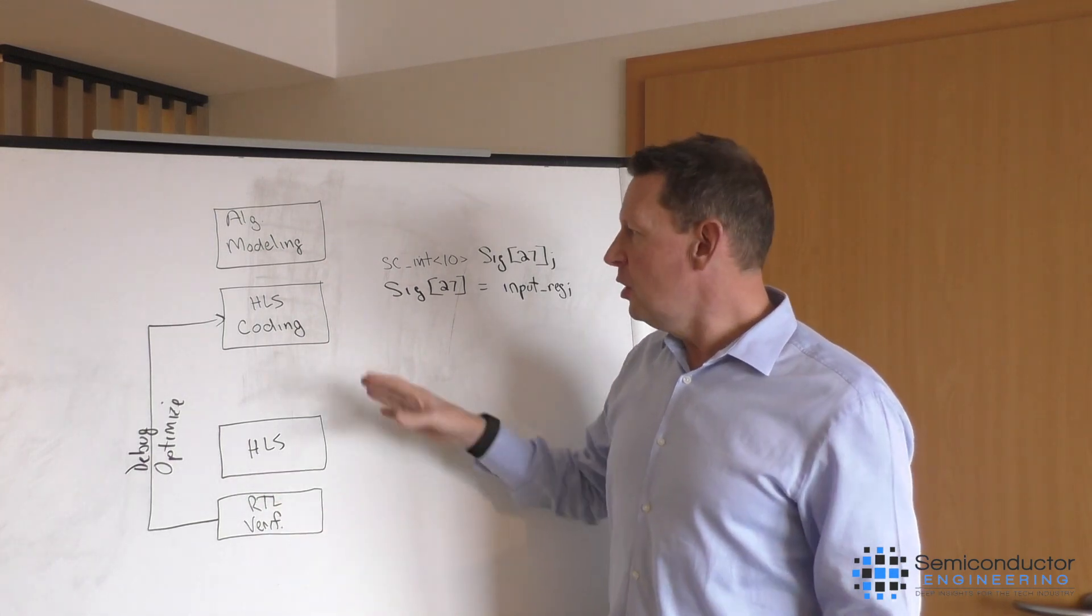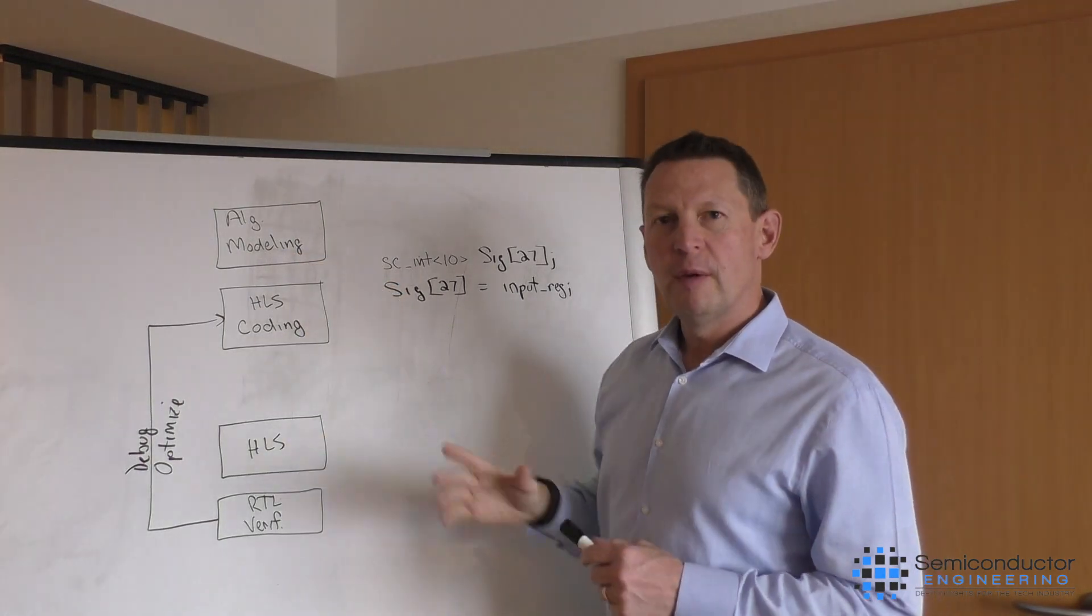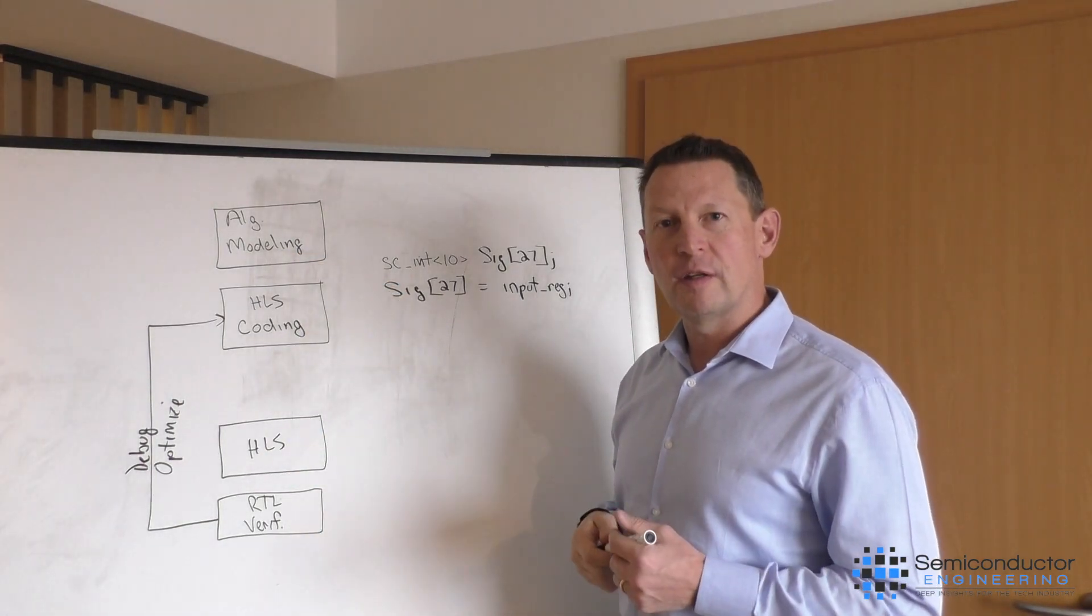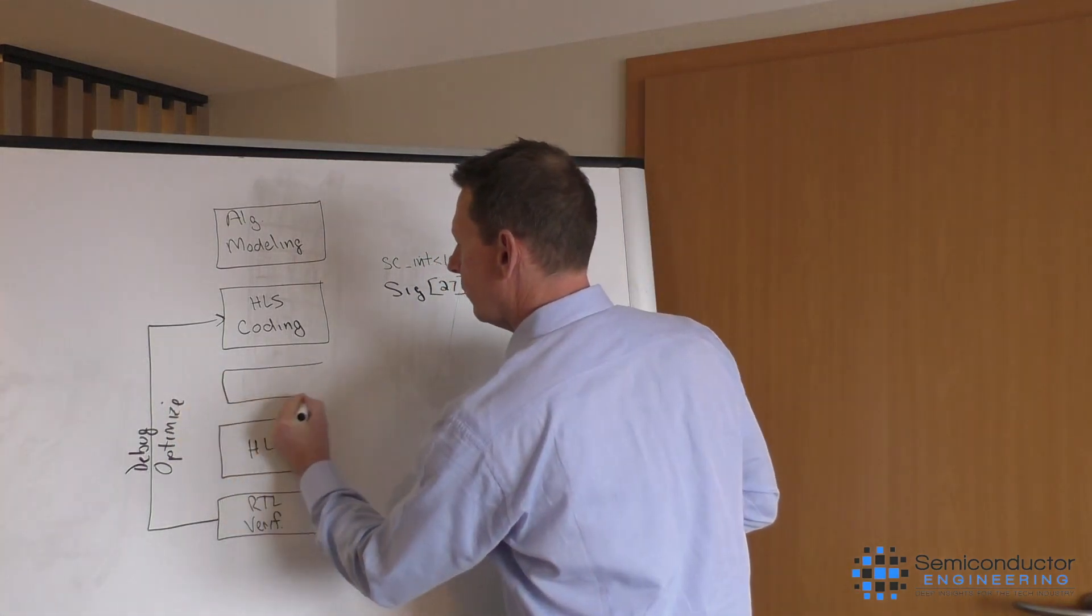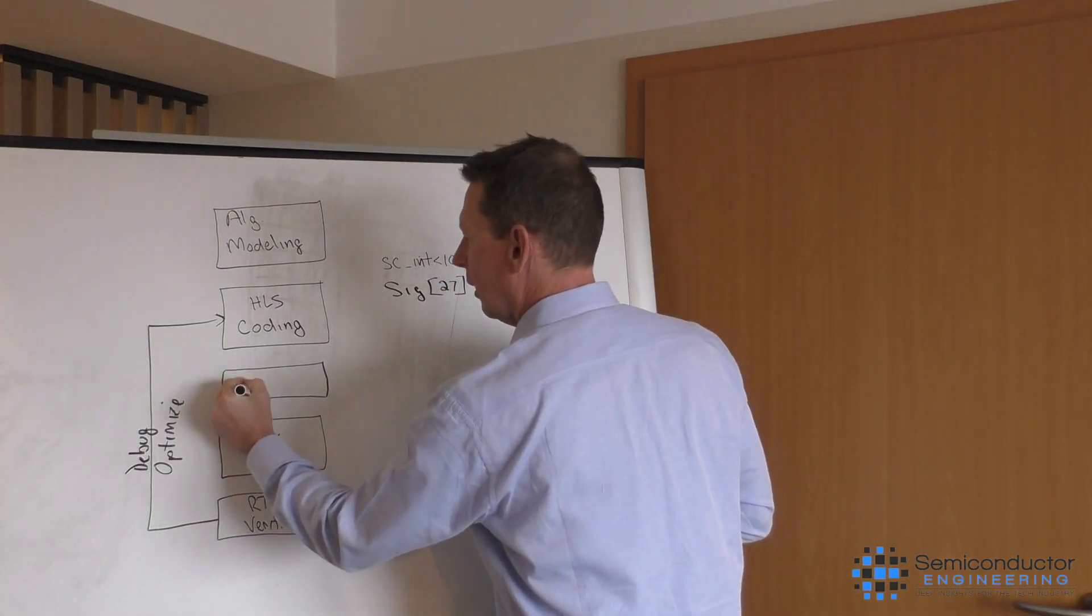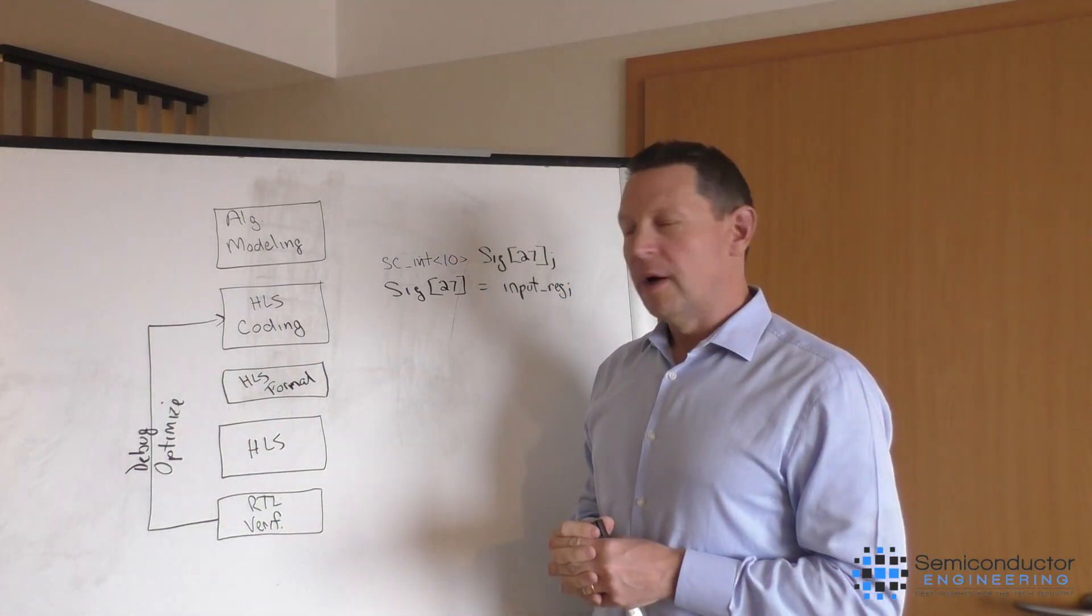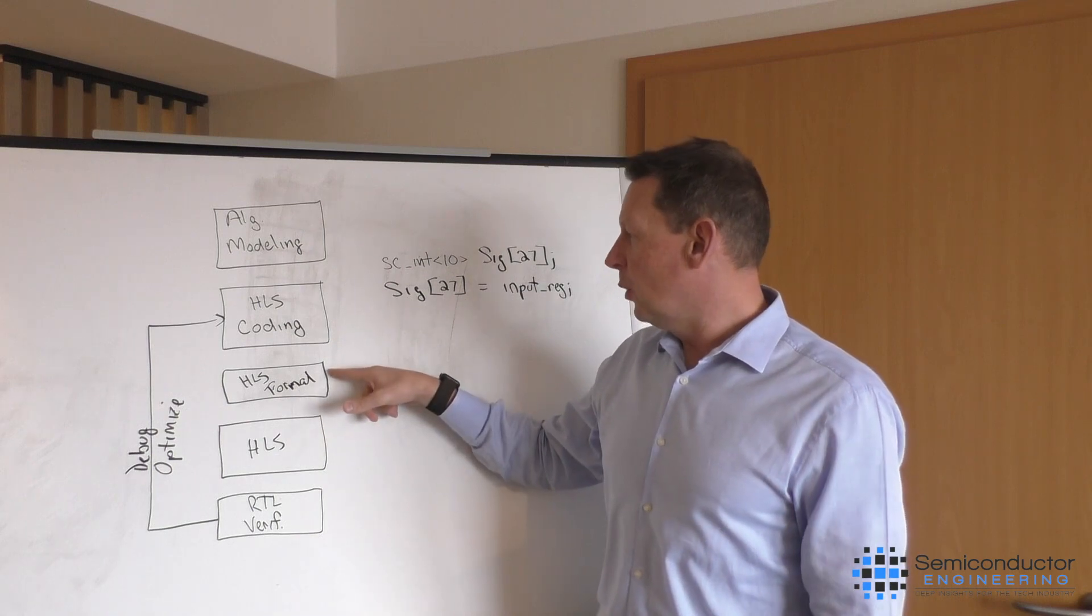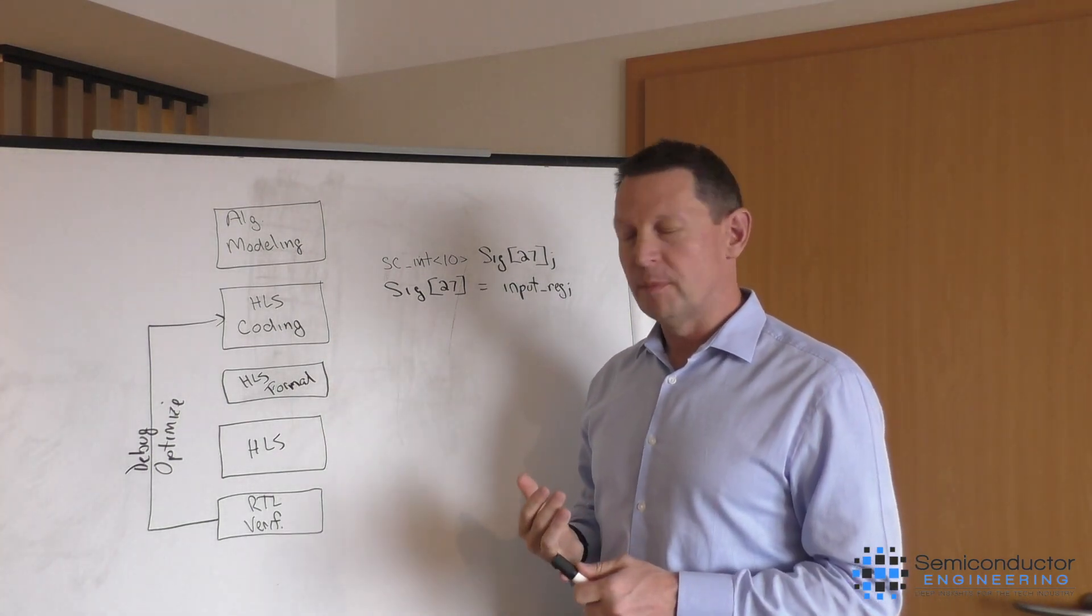So what's new here? What's new is that there's an opportunity for us to improve this loop by adding in some formal verification technology inside the HLS flow. And that's what we're doing. So here inside of this box, we'll add in HLS formal. Formal comes in a number of different ways here. We've got auto checks that automatically check your code and look for opportunities to improve it.